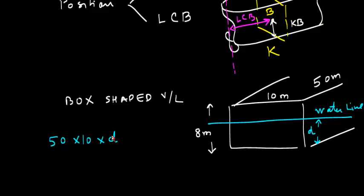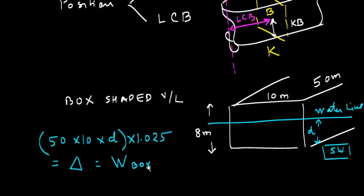And this underwater volume will be displaced. So if it is floating in salt water here, then this is the volume multiplied by relative density, which is 1.025, will be equal to the displacement or weight of box. Now, suppose this weight of box is given. Let's use this number. This is given, which is 2050 tons.